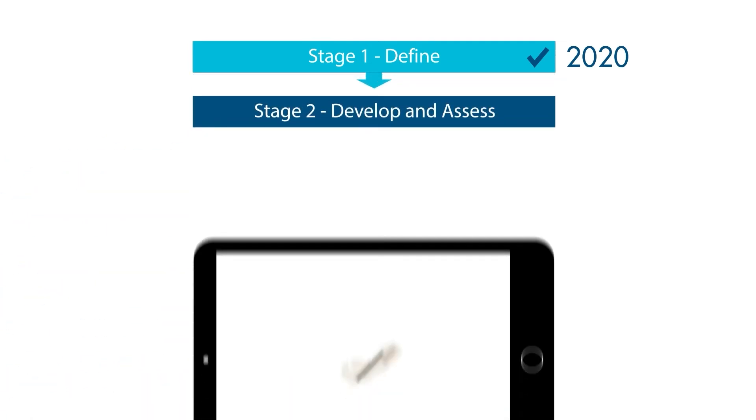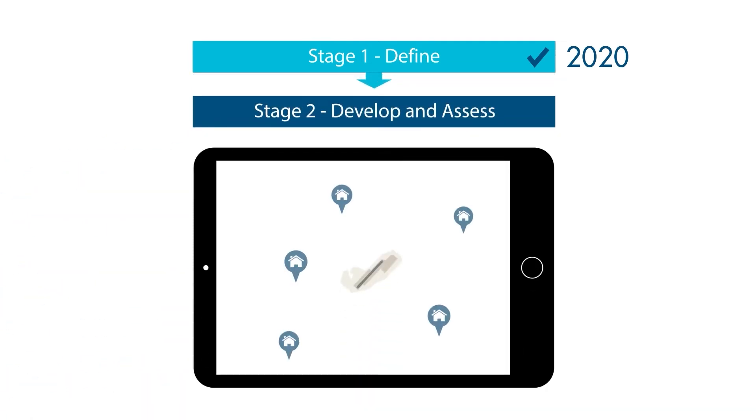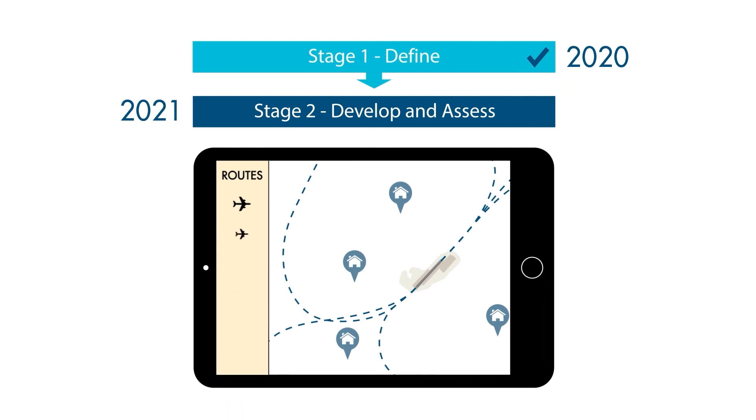Stage 2, DEVELOP and ASSESS, is where route options start to be developed and Stansted began this stage in 2021. A comprehensive list of route options was developed, which were informed by the design principles.